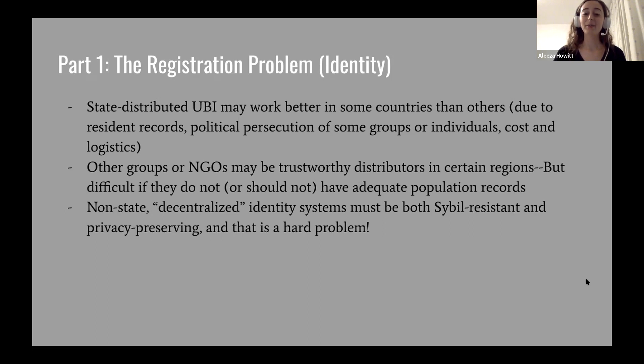This leads to the idea of a non-state or decentralized identity system, but something like this must be both sybil-resistant and privacy-preserving — and that is a hard problem to solve. Sybil-resistant just means there's only one account per person; you don't get someone signing up multiple times in order to overwhelm the system.